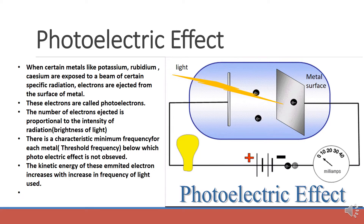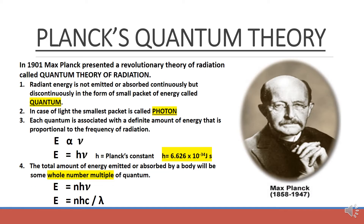Let us see how Planck's theory can explain this effect. In 1901, Max Planck presented a revolutionary idea called the quantum theory of radiation. He suggested that energy is not emitted or absorbed continuously — jaisa Maxwell ne kaha tha ki kisi bhi source mein se jab light ya koi bhi radiation emit karta hai, toh woh ek continuous wave pattern mein emit hoti hai. But Planck suggested that energy is radiated in the form of small packets called quanta. The smallest packet of energy is called a quantum, and it is not continuous — rather it is discontinuous.